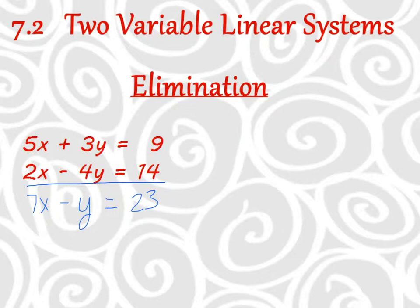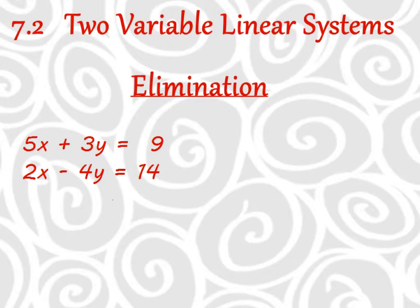It doesn't work to just add the equations together unless I can manage to get two matching terms so that when I add them, they cancel out. One would have to be positive and one would have to be negative for that to work — that's my goal, to get them to be the same number. It doesn't really matter if you try to eliminate your x or your y. On this example, I'm going to try to eliminate the y, mostly because one is already positive and one is already negative, so I just need to get them both to be the same number.